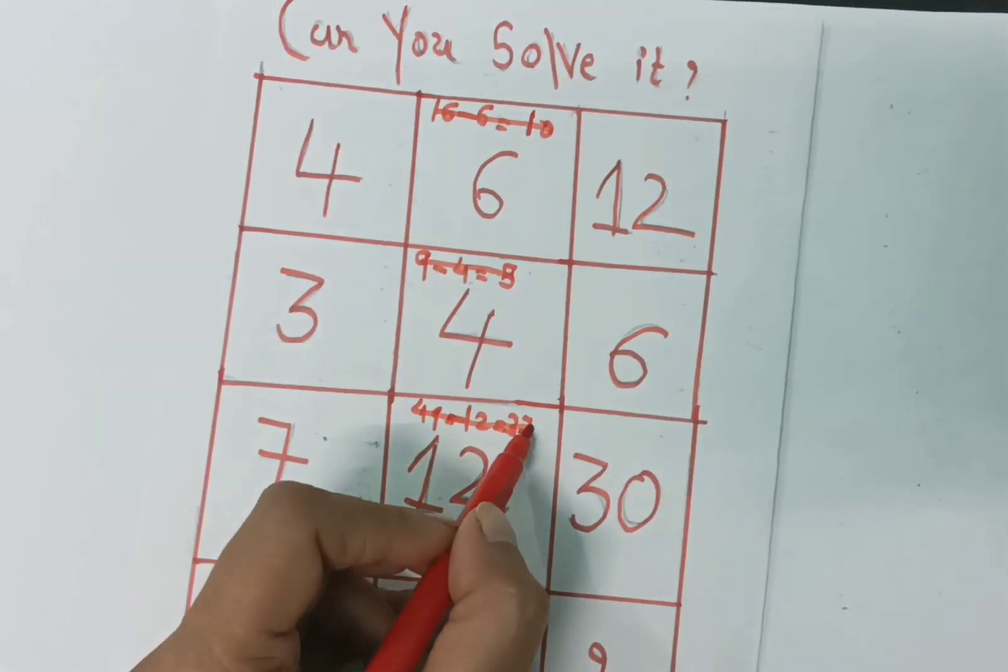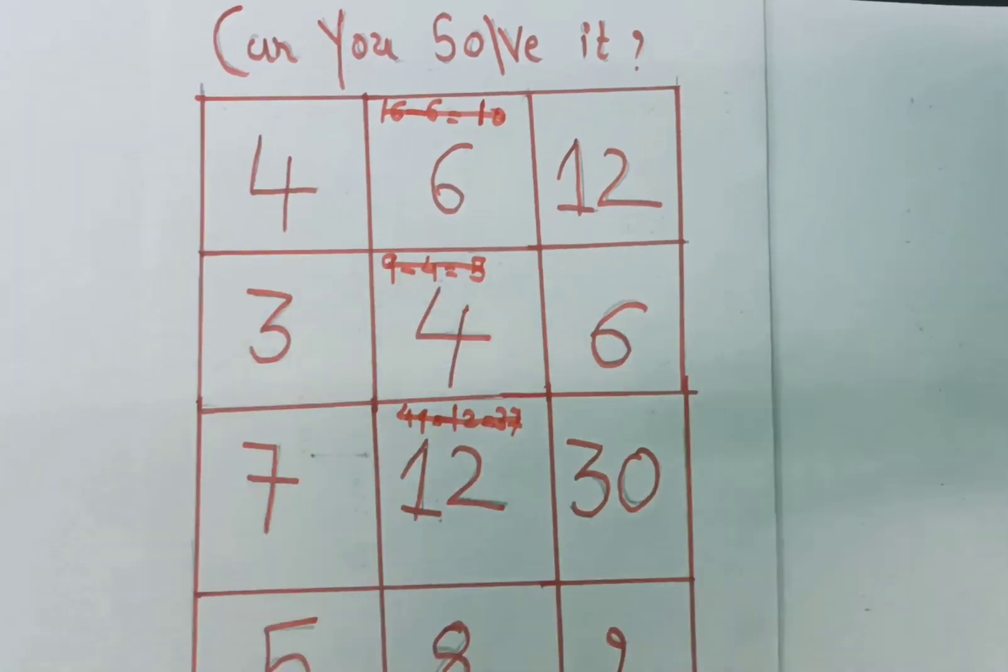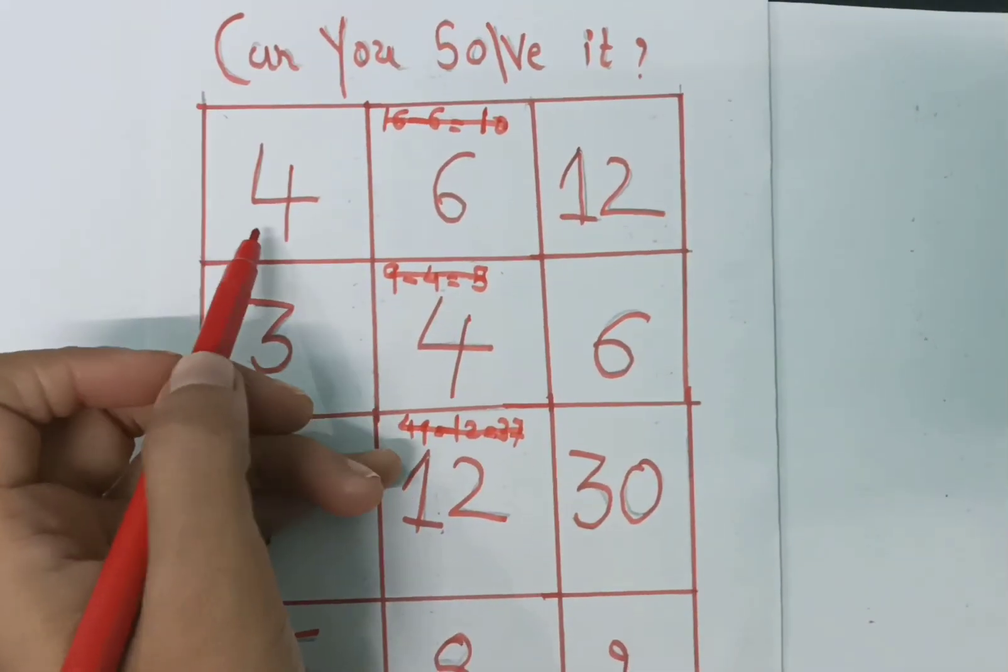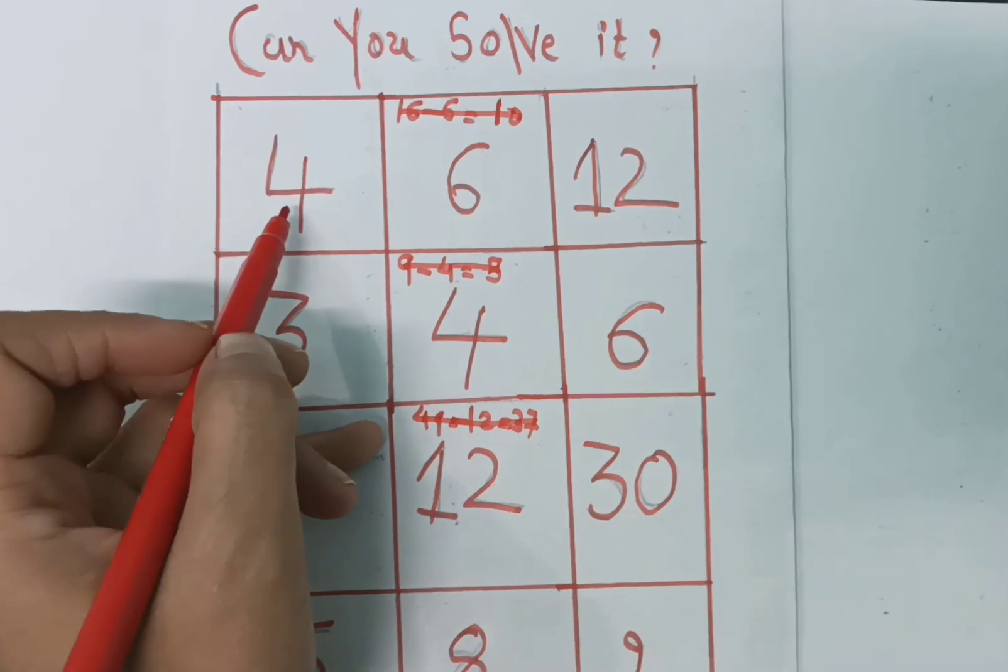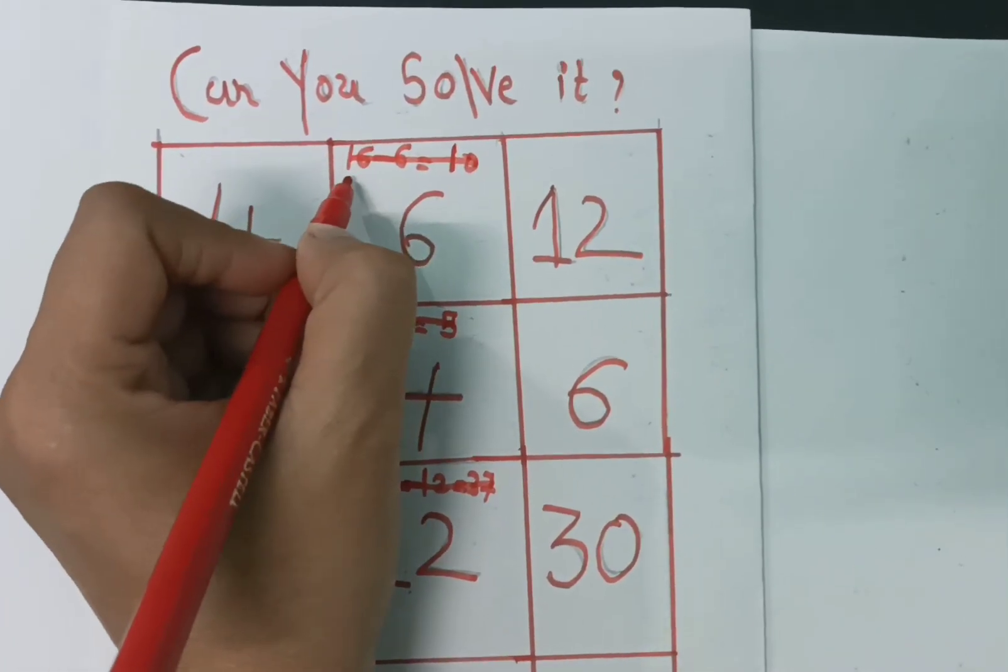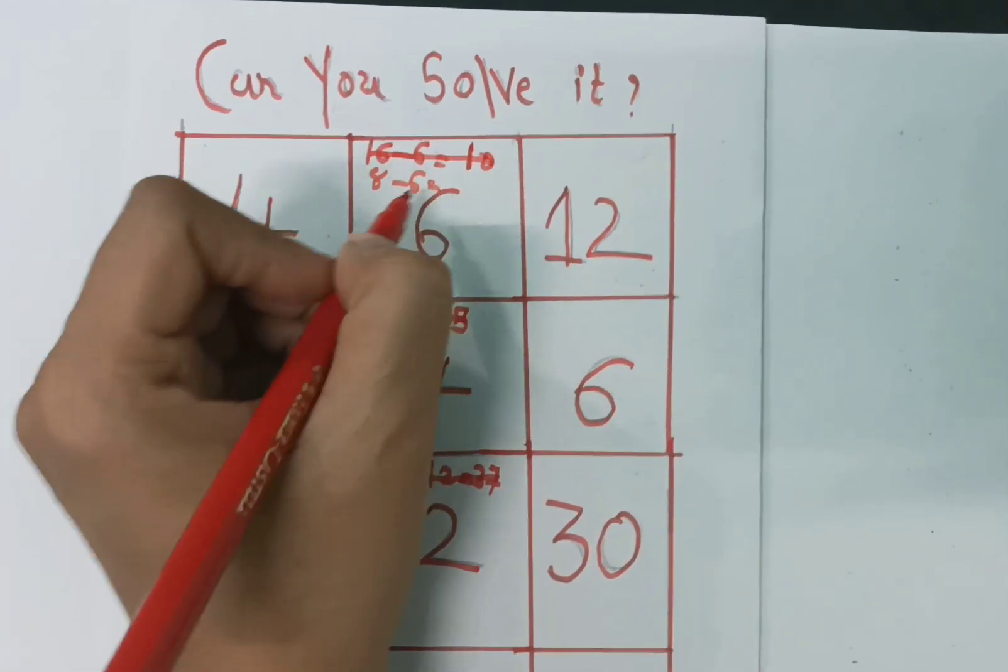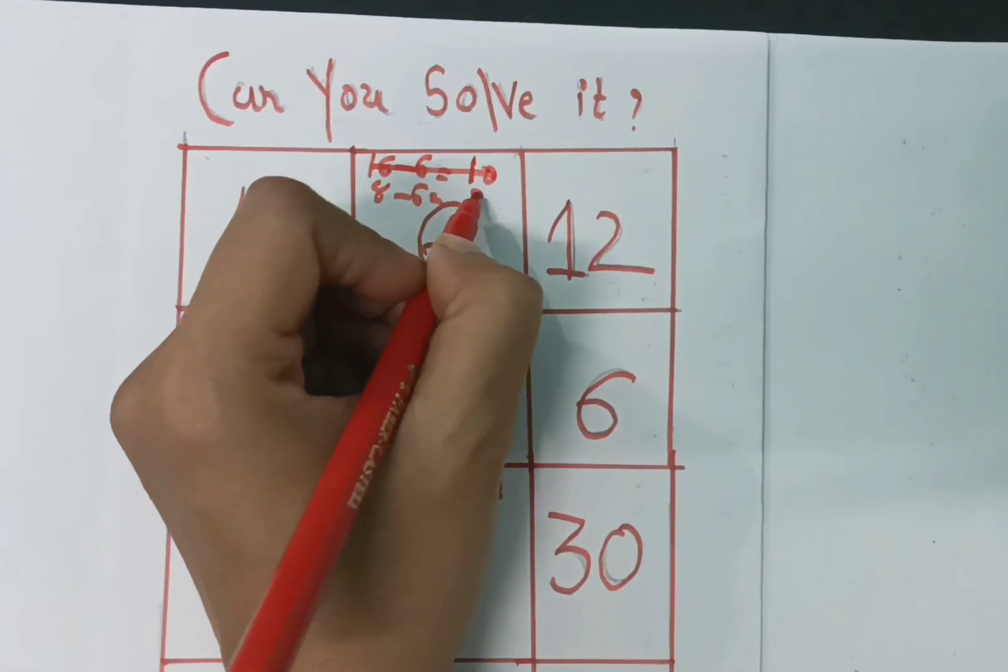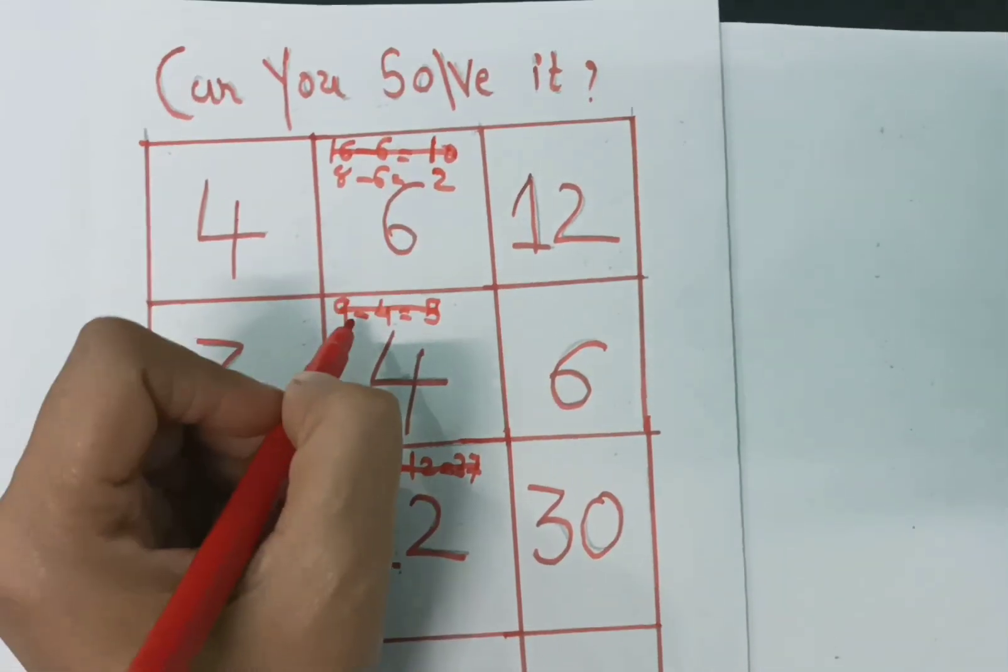Now we can multiply it with some number. First, we try to multiply with a smaller number, that is 2. 4 times 2 is 8, and minus 6, so we get 2 here. 3 times 2 is 6.